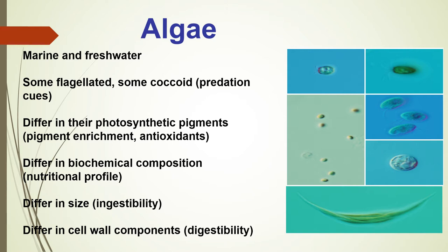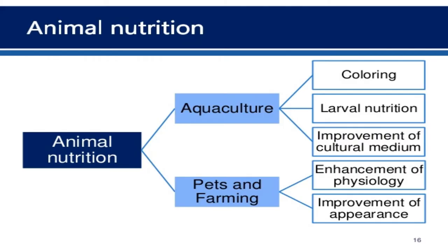Other parameters include whether antioxidant activity is present or not, and whether the biomass is rich in protein or lipid content. All these parameters have to be evaluated. Animal nutrition is of two types: aquaculture, and pets and farming.